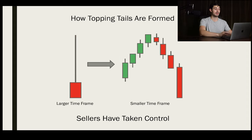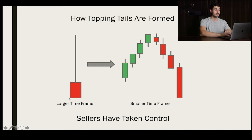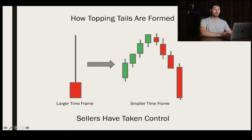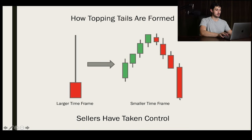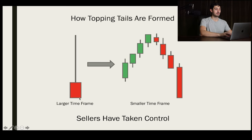Let's move on to a topping tail with a really large wick at the top. This is a red bar, so price opened at a higher price than at which it closed. It opened here, the buyer stepped up to the plate and brought it all the way up here — creating this high. From there, the sellers took control and brought it all the way back down to make new lows, which is the bottom of this body. This is how a topping tail is formed.